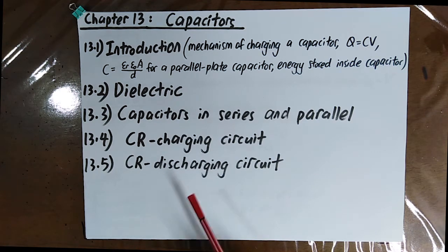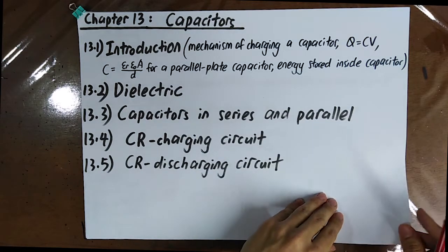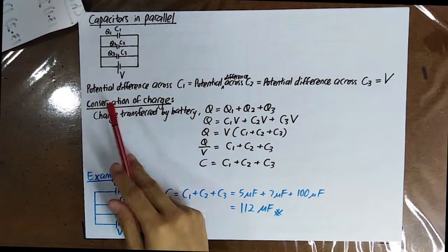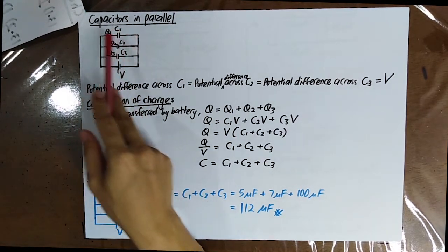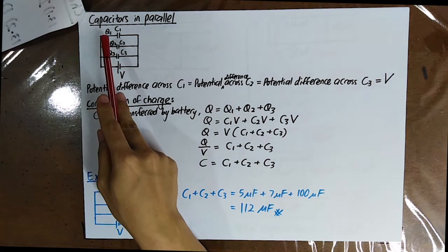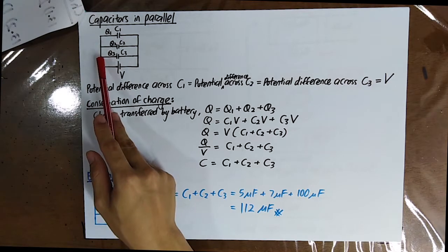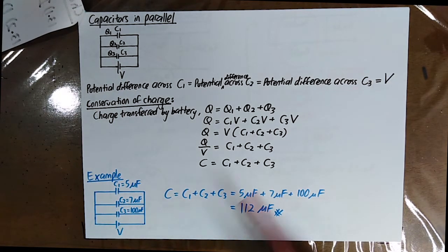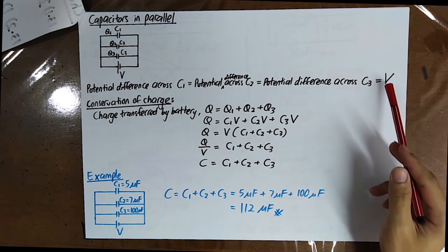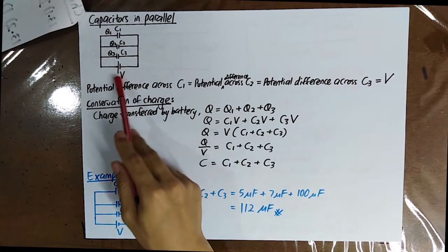In this video, we'll be talking about capacitors connected in parallel. For capacitors in parallel, the potential difference across each capacitor is the same. That means the potential difference across C1 equals the potential difference across C2, which also equals the potential difference across C3. We denote the potential difference across them as V, and V is actually the EMF of the battery.